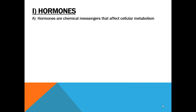We know that there are chemical messengers that affect metabolism. Metabolism can include both anabolic processes — which are synthetic, building, creating things — or it can also involve catabolic processes, which would involve digestion, hydrolyzing, and breaking compounds down.